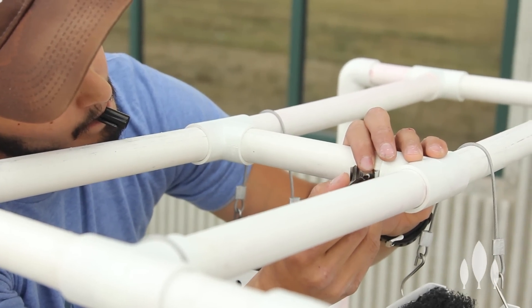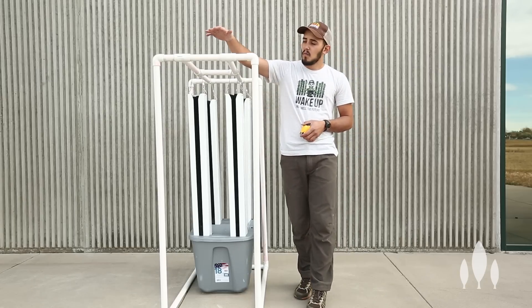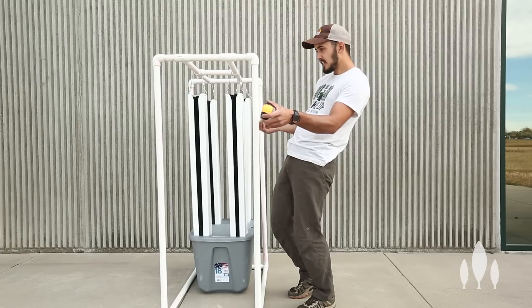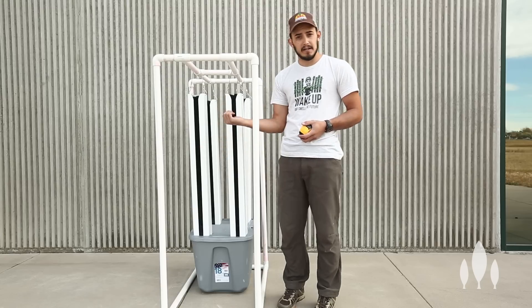That'll provide our back towers with light, and then we've extended our frame 15 inches forward and we'll hang two more T5 lights right here to supply our front towers with light.